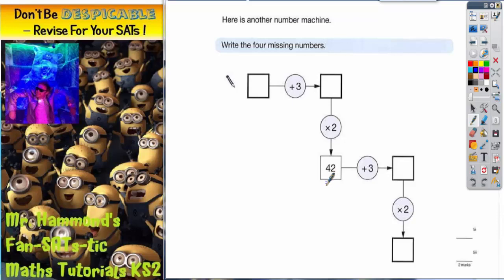From this 42, we can follow this arrow to the right and it says add 3, so 42 add 3 is 45. Then we follow this arrow down that says times 2, so 45 times 2 is 90. These two boxes are relatively straightforward to fill in.